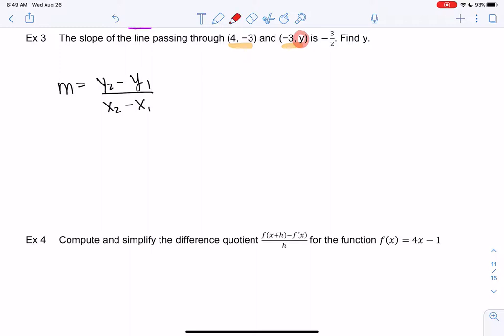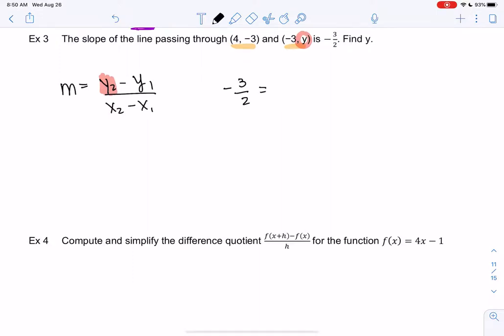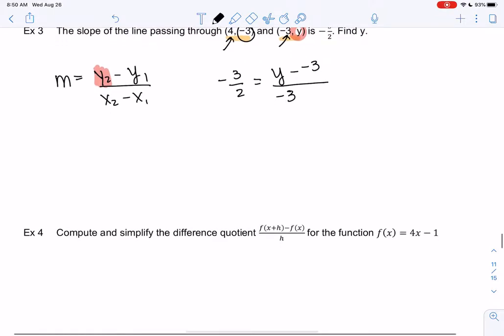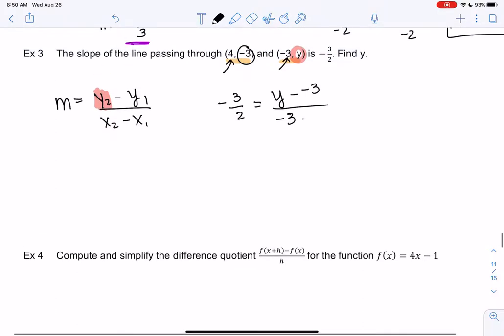We're going to solve for y2 rather than solving for slope. So we can use formulas in different forms. Let's go ahead and plug in. The slope is -3/2. My y2 is unknown, so I'll just call it y. My y1 would be -3, so minus -3. My x2 would be -3, and my x1 would be 4.